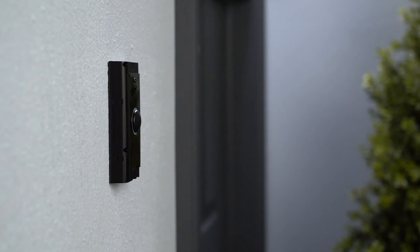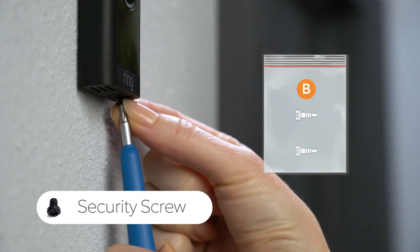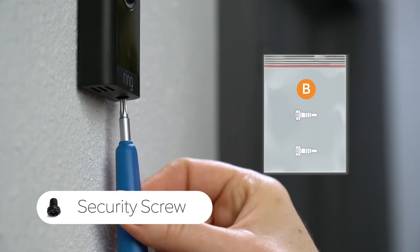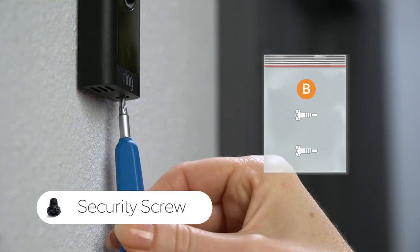Once power is on, you can reattach the faceplate. To secure it, get the special security screw from bag B. Never use any other type of screw to secure the faceplate. Insert the security screw into the bottom of your doorbell and tighten it.